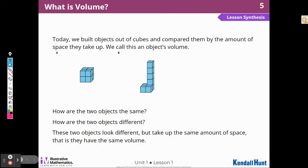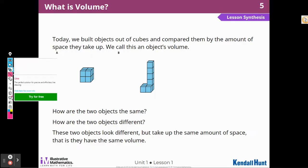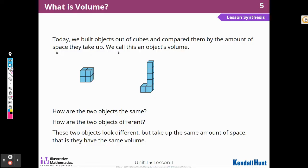So today's lesson, we built objects out of cubes and compared them by the amount of space they take up. We call this an object's volume. How are the two objects the same? They're all made out of cubes. And these two objects, they're both made out of eight cubes. How are the two objects different? They are different shapes. These two objects look different, but take up the same amount of space so they have the same volume.